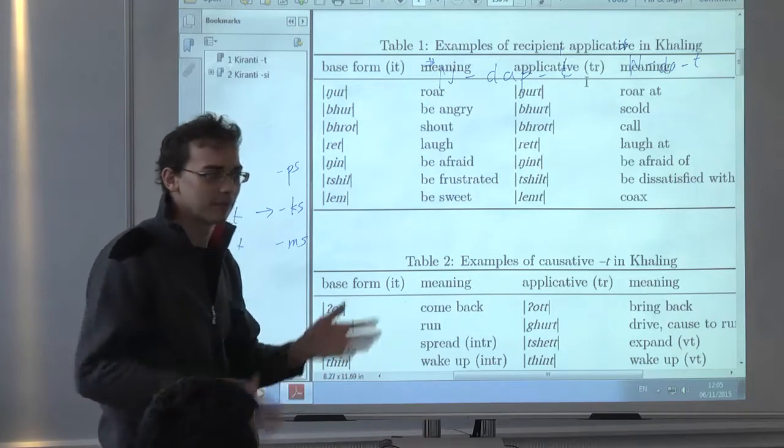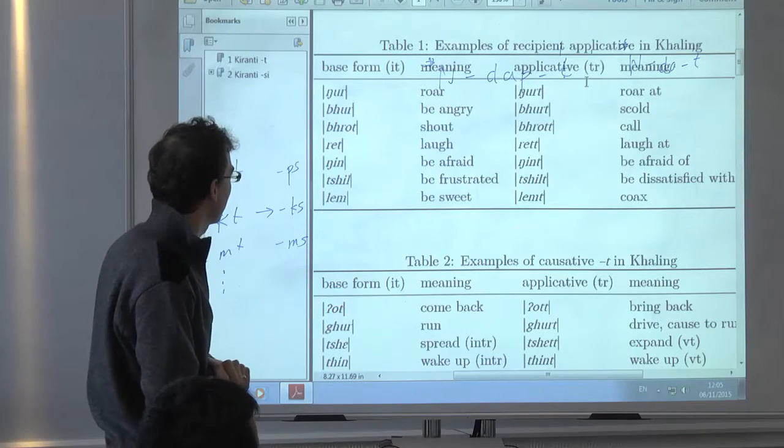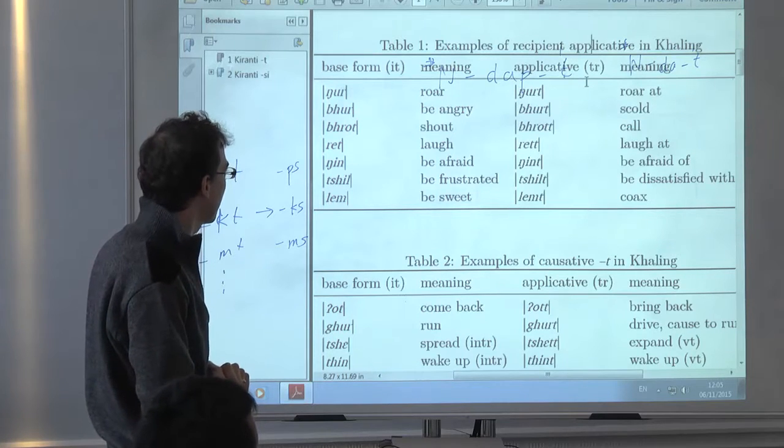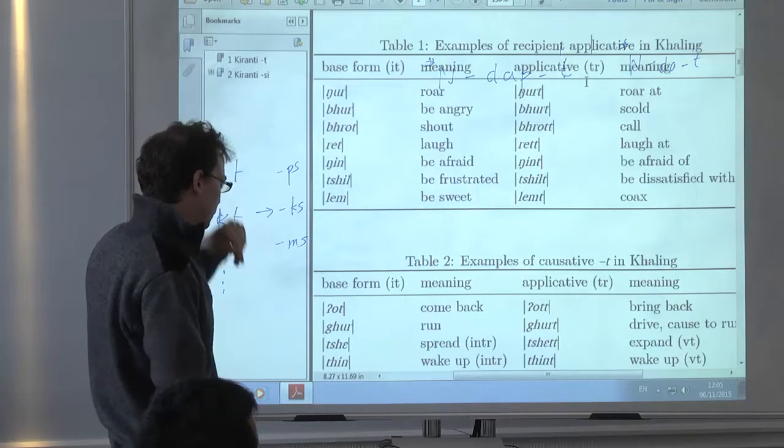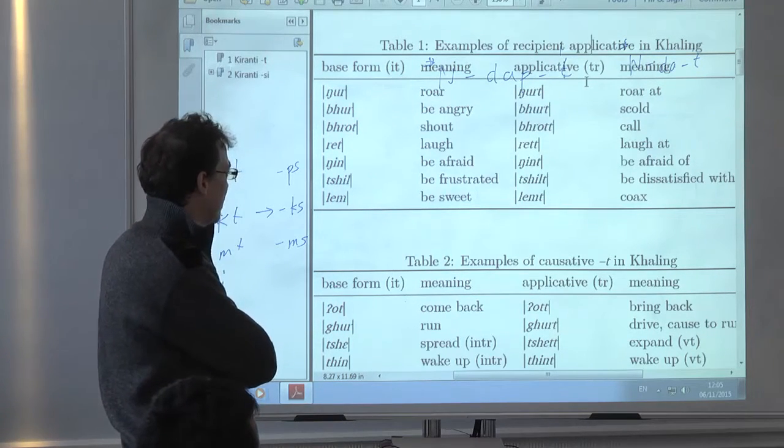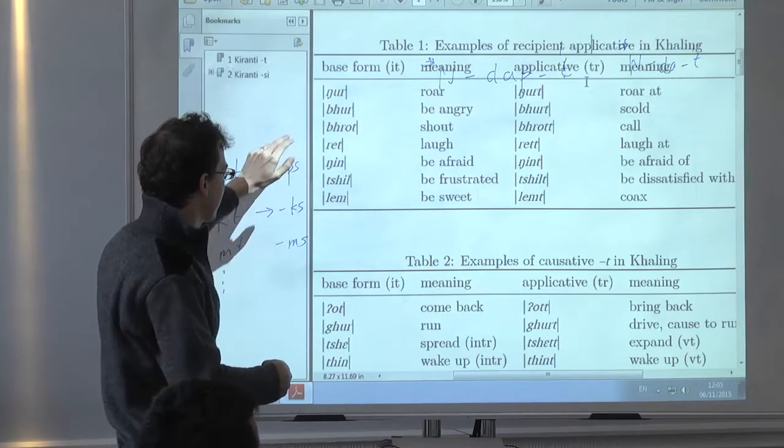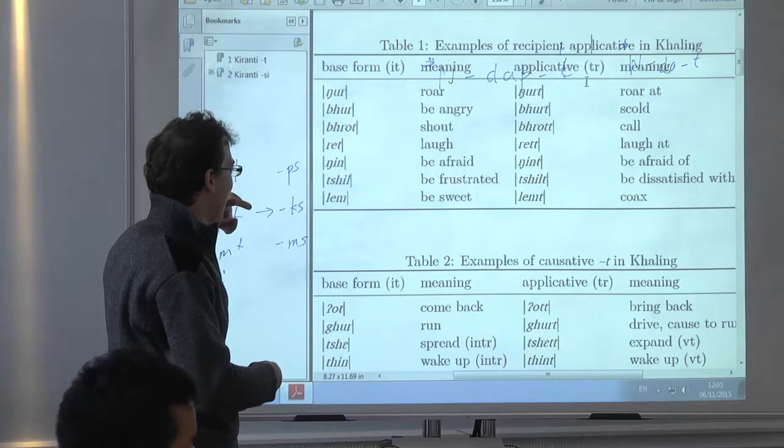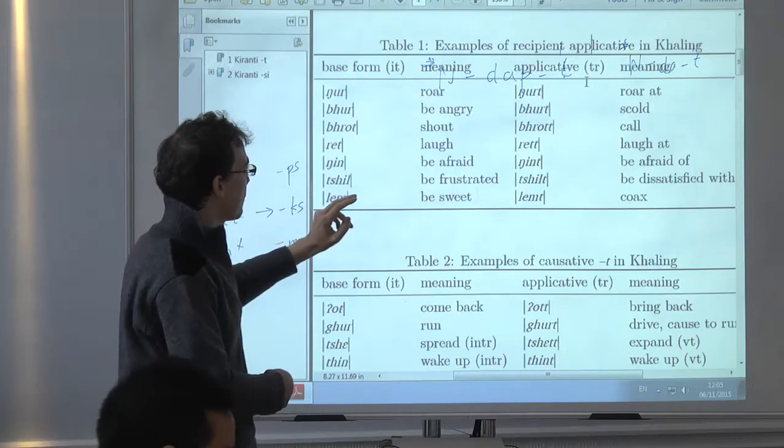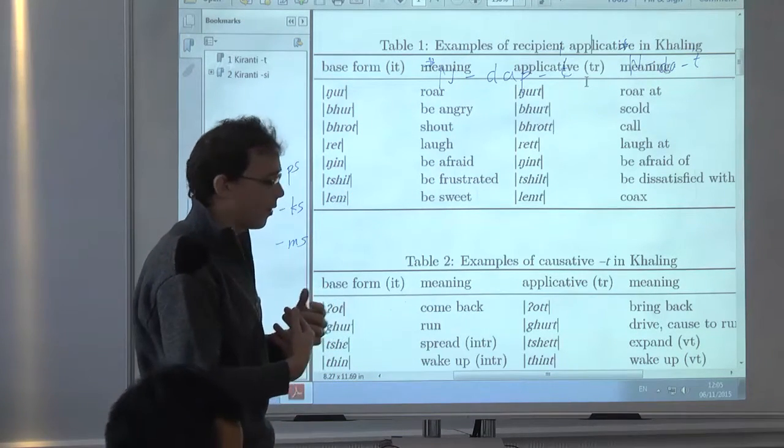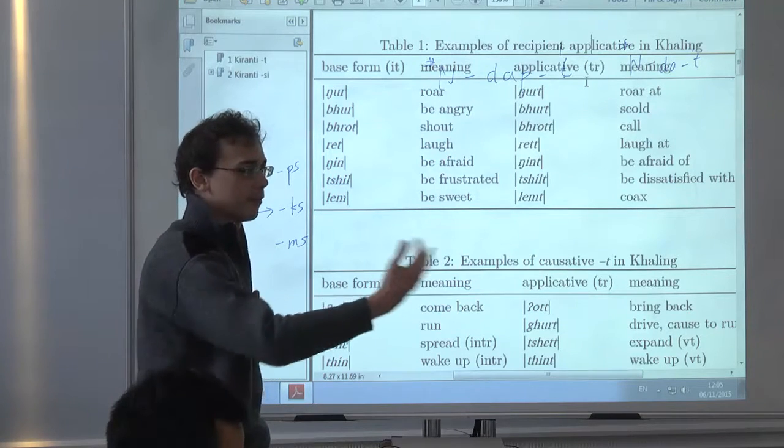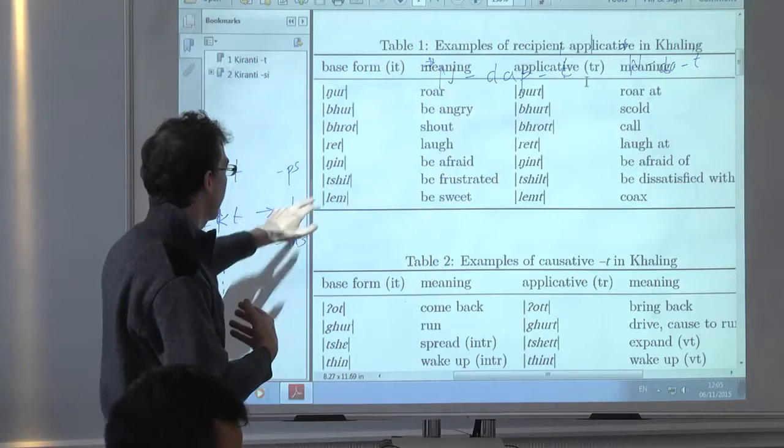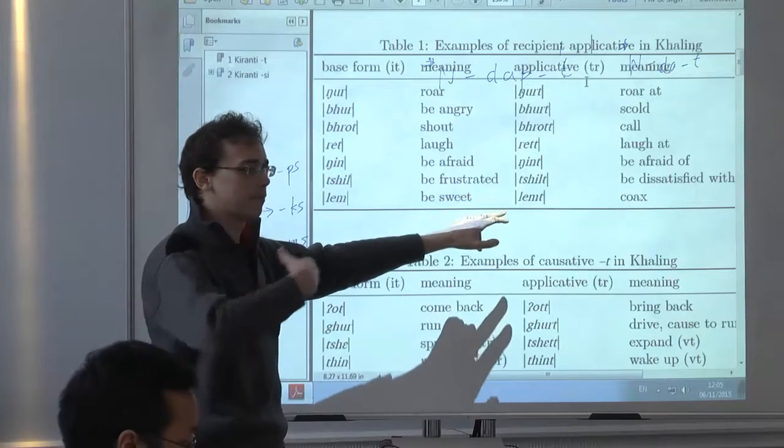So, basically, these verbs add either the recipient of something or the stimulus. To be frustrated, to be frustrated from something. So, either it's, say, a feeling and you have the experiencer, which corresponds to the subject. And you add the, with the suffix, you add the stimulus.